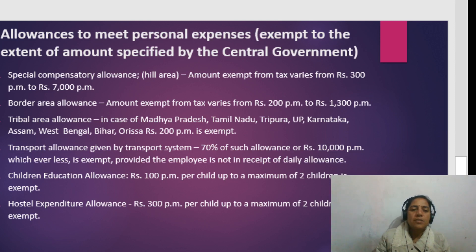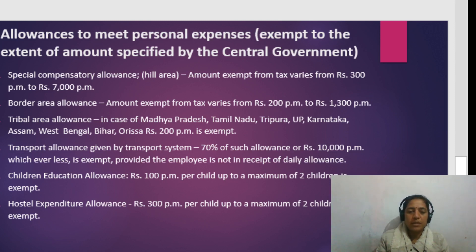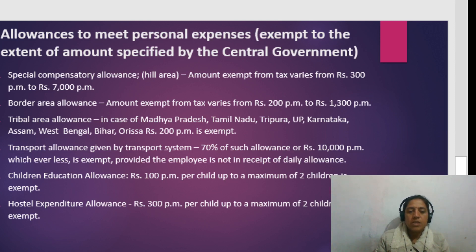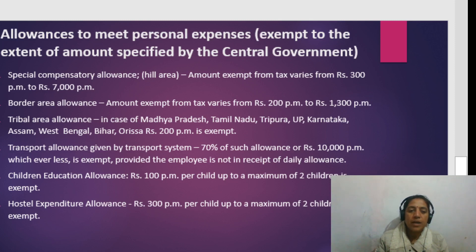Special Compensatory Allowance: the exempt amount varies from Rs. 200 to Rs. 1,300 per month depending upon the area. Next is Tribal Area Allowance — applicable in states such as Madhya Pradesh, Tamil Nadu, Tripura, UP, Karnataka, Assam, West Bengal, Bihar, and Orissa. Rs. 200 per month is exempt.